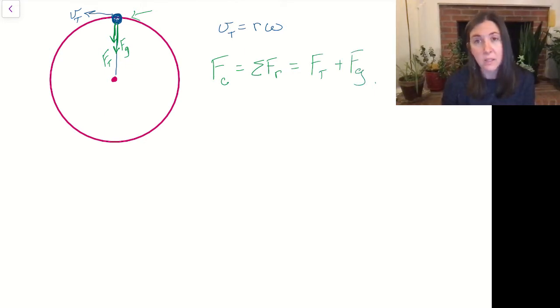And they're both in the positive radial direction. Positive is towards the center. So whichever way is towards the center is going to be positive and away from the center will be negative.